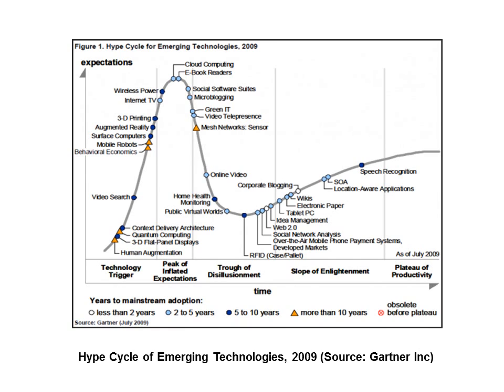This slide shows Gartner Incorporated's view of where we are in the hype cycle of the emerging technologies. You can see that there will be an expectation spike before you get real productivity. This is from 2009. In their view, cloud computing was at the peak of hype, at the peak of expectation, with little real productivity value.